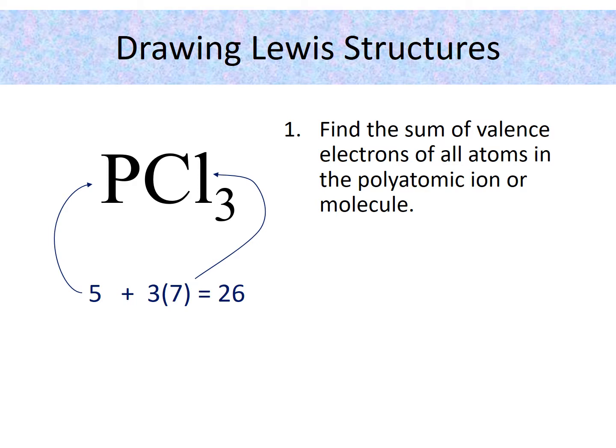So do you remember how we do valence electrons? For example, phosphorus is in group 5a, so that means we have five valence electrons. Chlorine is in group 7a, so that would be seven valence electrons. But we do have three chlorine atoms, so in this case it all adds up to be 26 valence electrons.